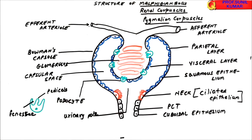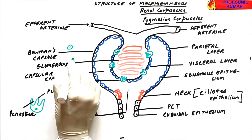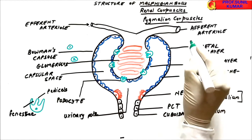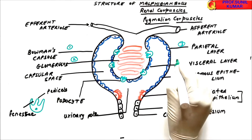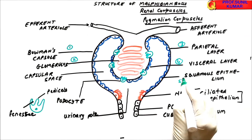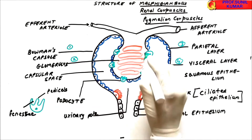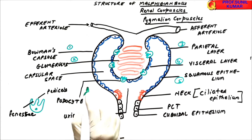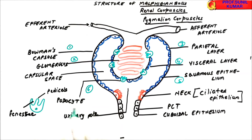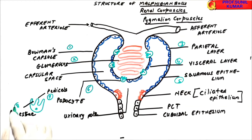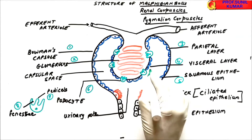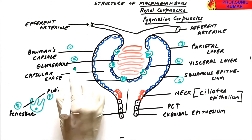Let's revise in short. The Malpighian body consists of Bowman's capsule and the glomerulus. The outermost layer is the parietal layer; the inner layer is called the visceral layer, which is not continuous squamous epithelium. The visceral layer is made up of specialized cells called podocytes. The podocytes have fenestrae and finger-like projections called pedicels. The urine accumulates in the capsular space.